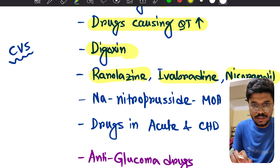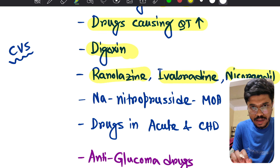Ranolazine, ivabradine, and nicorandil — these three are trending topics. Sodium nitroprusside mechanism of action, and drugs used in acute and chronic heart failure. From ANS: anti-glaucoma drugs are extremely important, drugs causing myasthenic syndrome, drugs for benign prostatic hyperplasia — tamsulosin and finasteride — all are important.